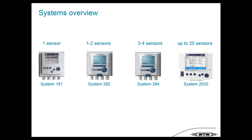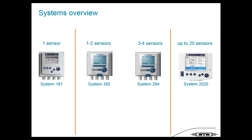From the IQ systems we have different types so you can customize to local needs. We have a system for one sensor, systems for up to four sensors, and systems for up to 20 sensors. So we have a single parameter solution, a single measuring point solution, and a full network solution.